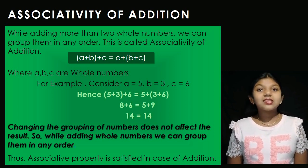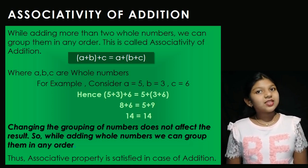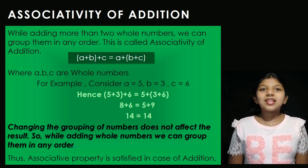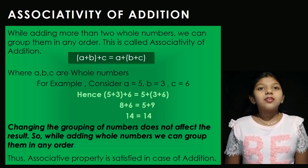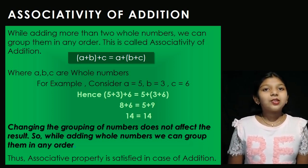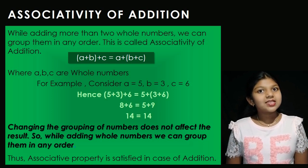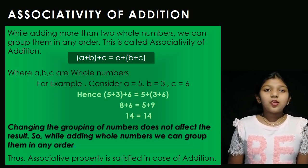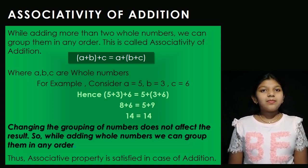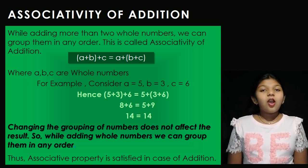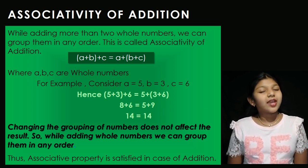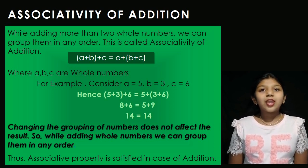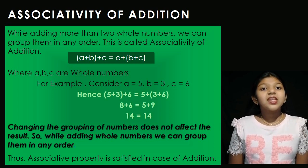For example, consider A is equal to 5, B is equal to 3 and C is equal to 6. On the left hand side, 5 and 3 are grouped and the result is added with 6. So 8 plus 6 is equal to 14. On the right hand side, 3 and 6 are grouped and the result is added with 5. So 5 plus 9 is equal to 14.